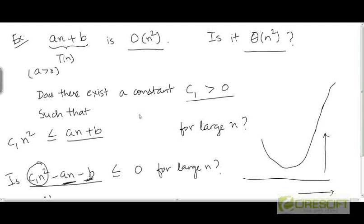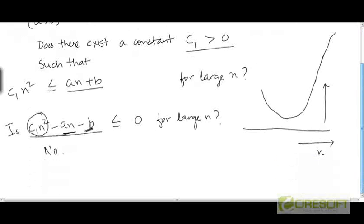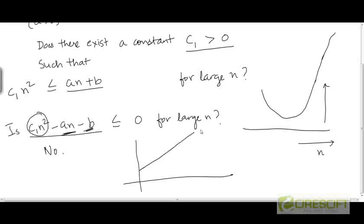So even though an plus b is O(n²), it is not θ(n²). Now visually, what is an plus b? Visually, an plus b is going to be a straight line.